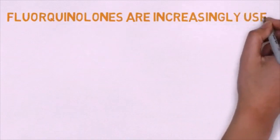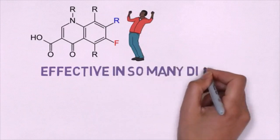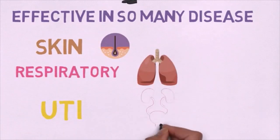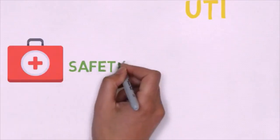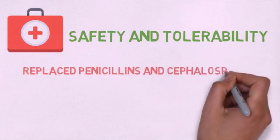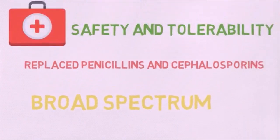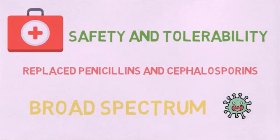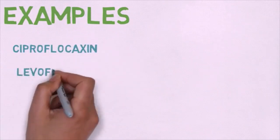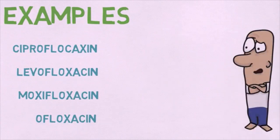Fluoroquinolones are increasingly used as bactericidal antibiotics. They are effective in a wide variety of infectious diseases including skin infections, respiratory infections, and urinary tract infections (UTI). Because of their excellent safety and tolerability, fluoroquinolones have become popular alternatives to penicillin and cephalosporin antibiotics. They have broad-spectrum antimicrobial activity against gram-positive streptococci, gram-negative bacteria, and anaerobes. Examples include ciprofloxacin, levofloxacin, moxifloxacin, and ofloxacin — all sharing the common '-floxacin' suffix.